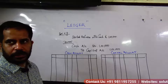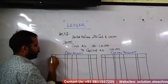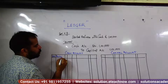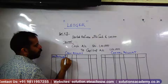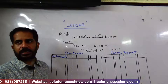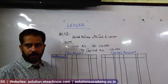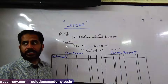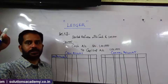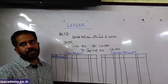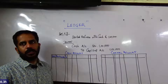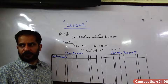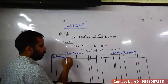The posting will be the same. Here the columns are: Date, Particulars, and J.F. — that is Journal Folio — which tells you where you went in the journal entry. Then there is L.F. — Ledger Folio — and Amount in Rupees. The Journal Folio column is J.F.